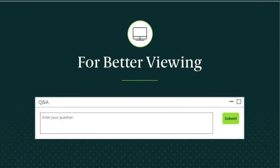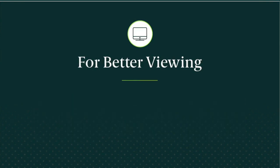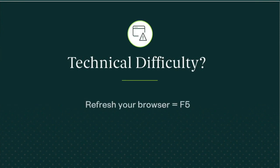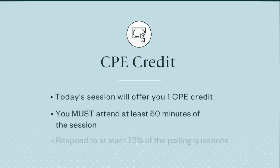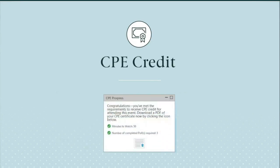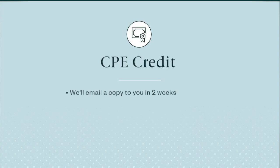We'll do our best to answer all questions during the presentation or follow up via email. If you experience technical difficulty during today's presentation, refresh your browser by hitting the F5 key. Today's session will offer you one CPE credit. To receive credit, you must meet the requirements as specified by the National Association of State Boards of Accountancy. You must attend at least 50 minutes of the session and respond to at least 75% of the polling questions. We'll track your progress and alert you when you've earned CPE credit. You can then click the certificate icon in the CPE progress widget to open a PDF file that you can save to your computer. We'll email a copy to you in two weeks.